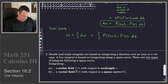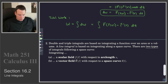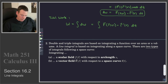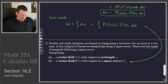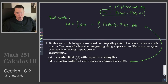Double and triple integrals are based on integrating a function over an area or a volume. A line integral is based on integrating along a space curve, and there are two types. We could integrate a scalar field with respect to arc length, or we could integrate a vector field with respect to a space curve. The vector field case is what we just did above. A quick example of the scalar field case: suppose you had a rod — a curve going through space — whose density depends on its position.